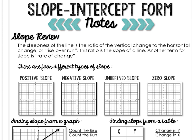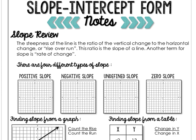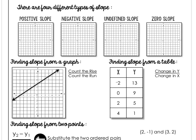Another term for slope is rate of change. The types of slope are: positive slope, where it's increasing; negative slope, where it's decreasing; undefined slope, which is a vertical line because there is no horizontal change; and zero slope, which means there's no vertical change.